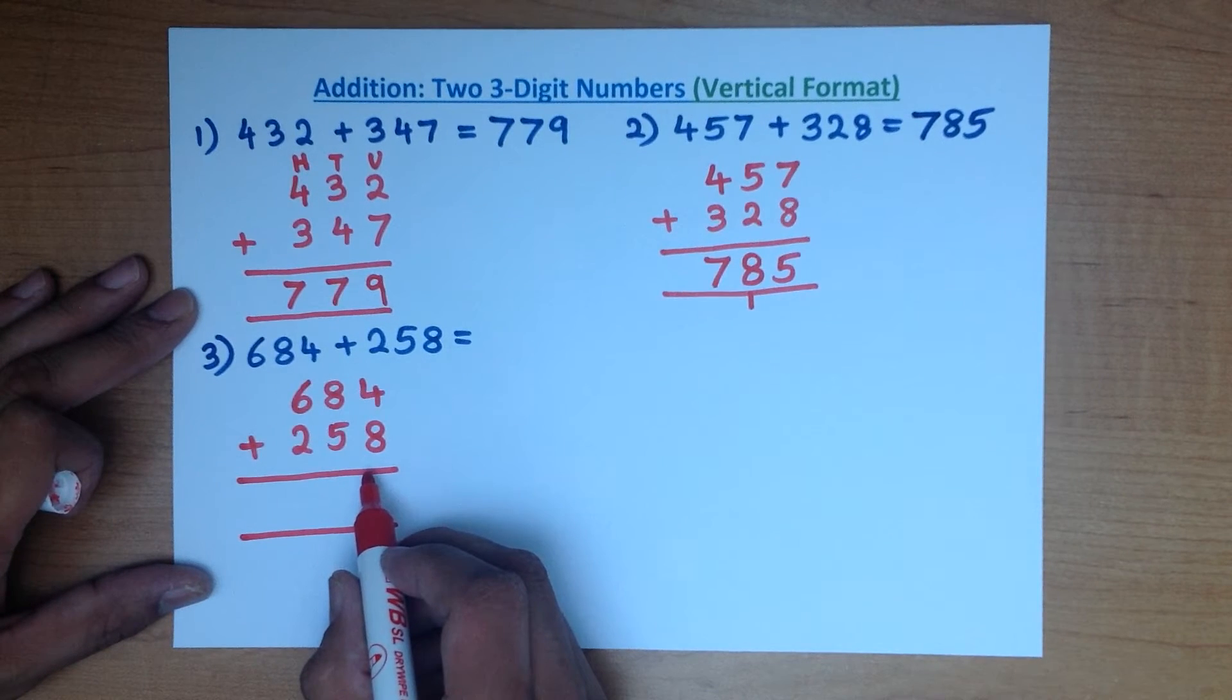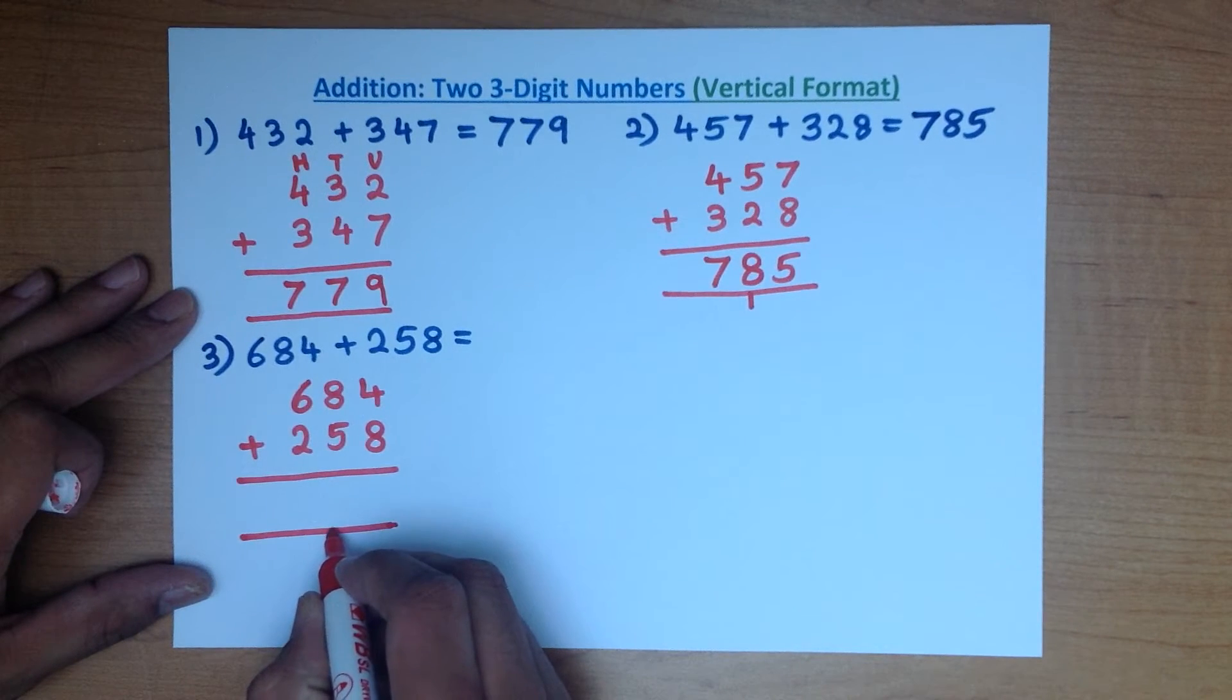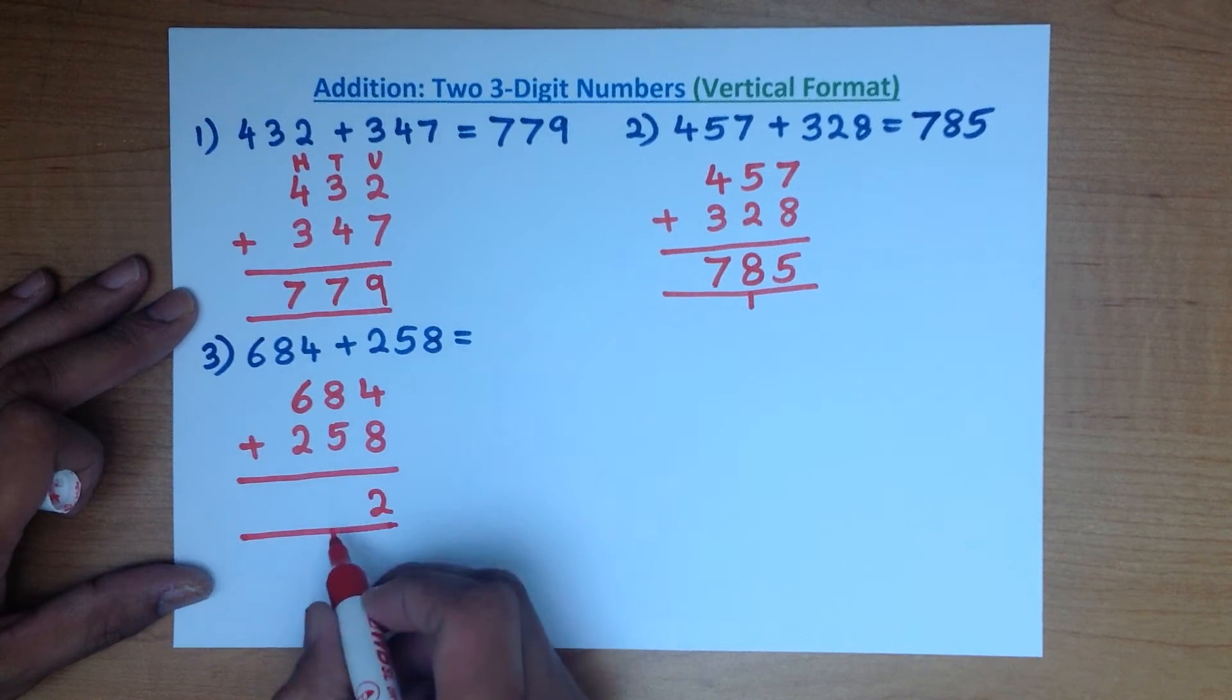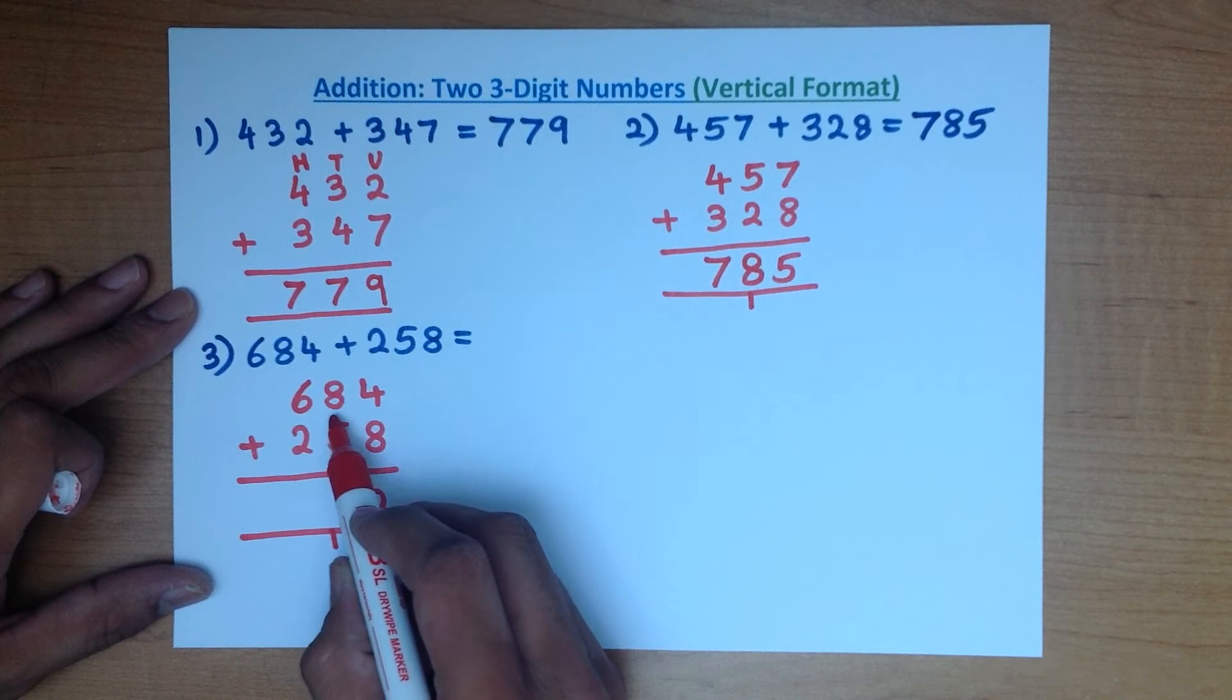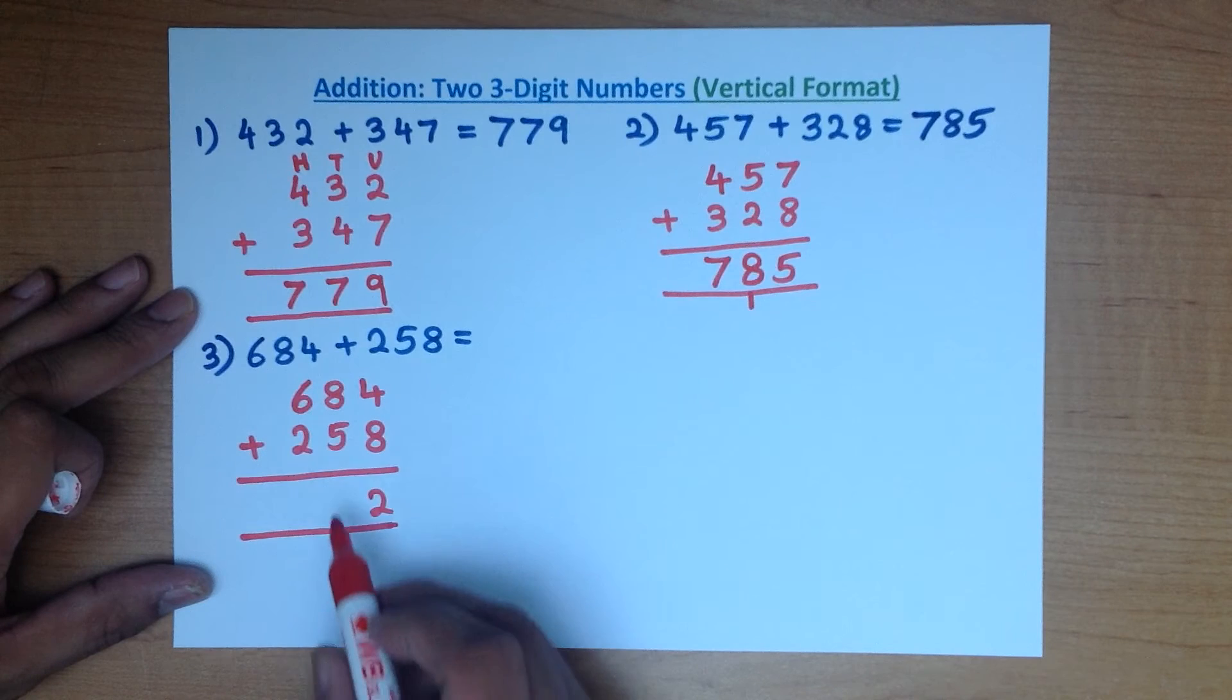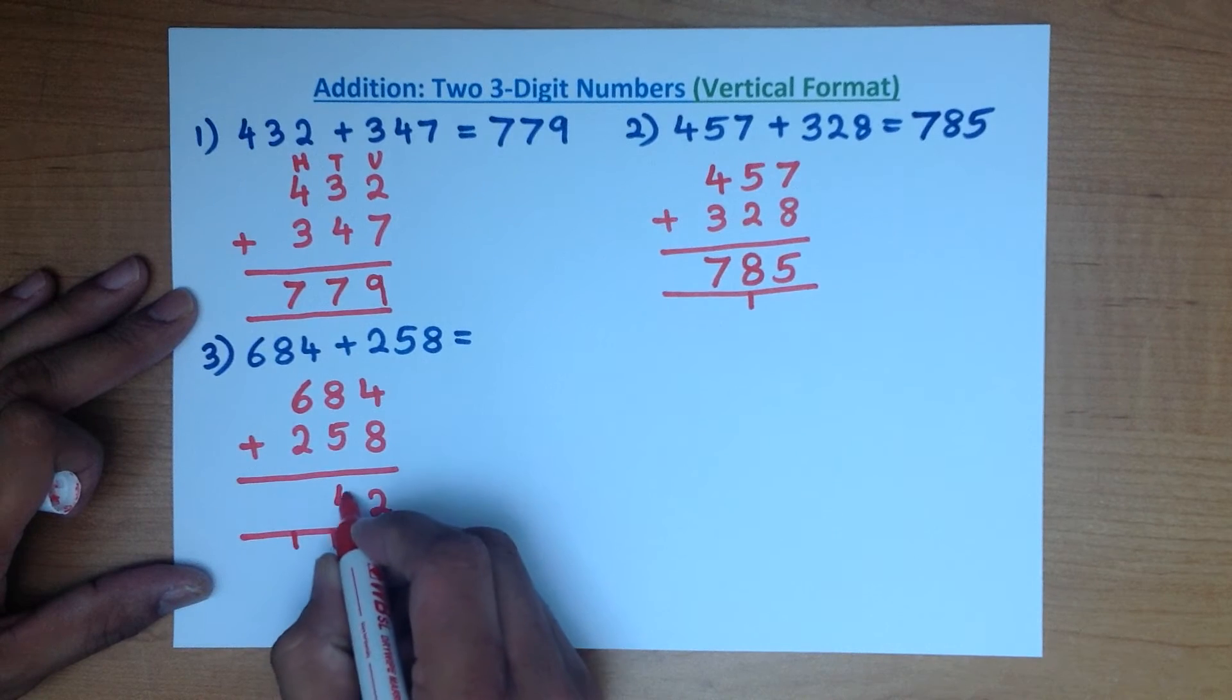What is 4 plus 8? That's right, it's 12. And we write it down. 1 here and 2 here. This 1 is now part of the tens column. We now add the tens. What is 8 plus 5 plus 1? Well, 8 plus 5 is 13, plus 1 is 14. 1 here, 4.